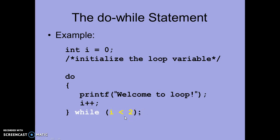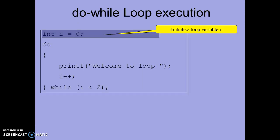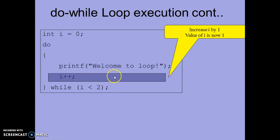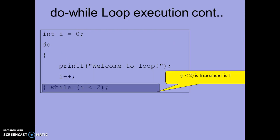Let's see how this works. Initially i is equal to 0, so the loop variable i is initialized with 0. We enter the loop and the first statement — printf 'welcome to loop' — is executed. Then the value of i is increased using i++, which increases the value of i by 1. So initially i was 0, and after the increment it becomes 1.